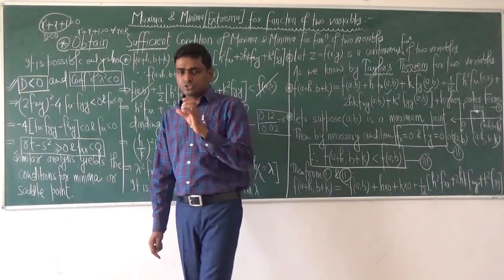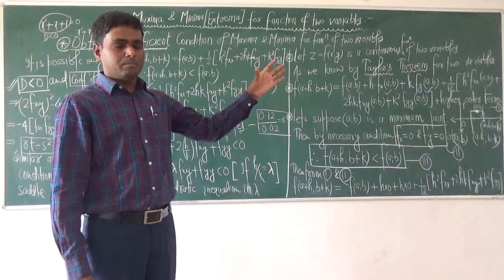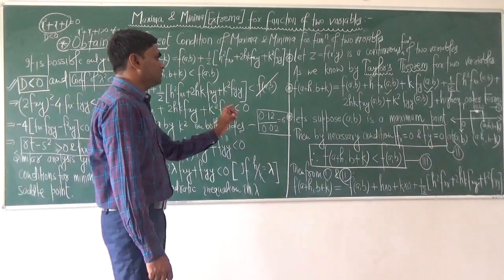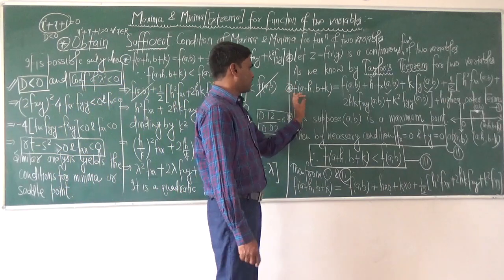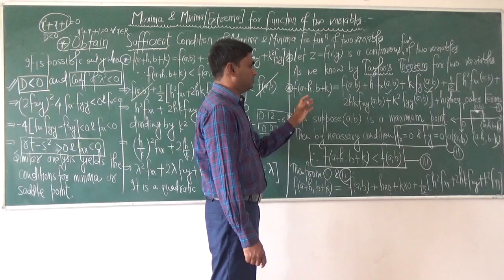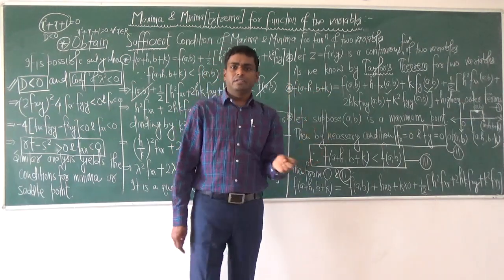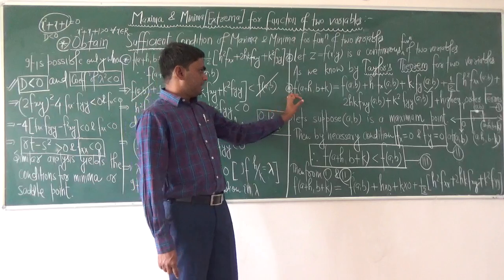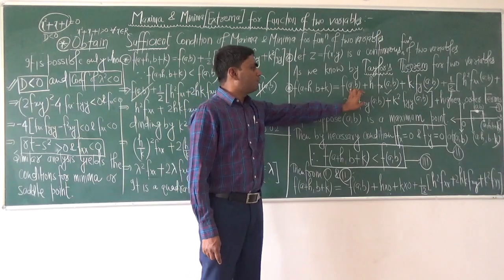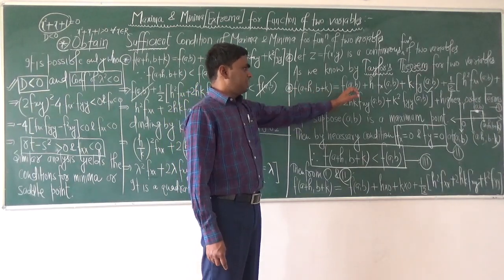To obtain the sufficient condition, first of all we have to consider Taylor's theorem for functions of two variables. Let (a, b) be a point in two dimensions. Then by Taylor's theorem we have f(a+h, b+k) = f(a, b) plus further terms. This expansion is about the point (a, b).